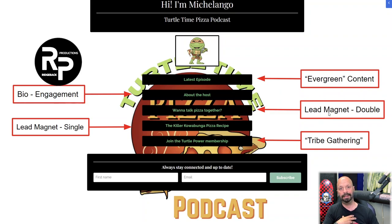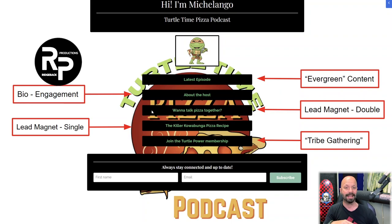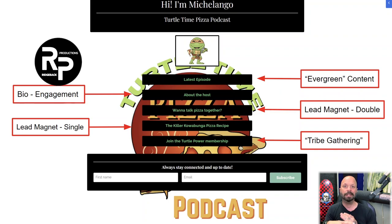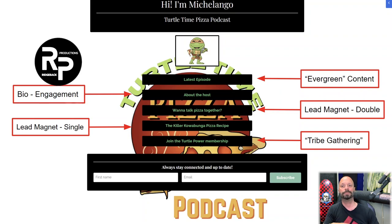The third link is a lead magnet to be a guest on the show. This is a double lead magnet because it benefits you — you're going to capture their name and email address — but you're also going to get free marketing because when they're on your show, they're going to blast out on social media that they were on the show. Every time they mention the show on their social media, it benefits you. Plus having them on the show, you get to gather even more information about your audience by talking to them and finding out their wants and needs.